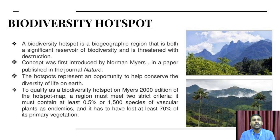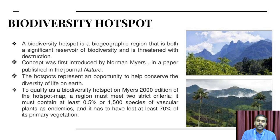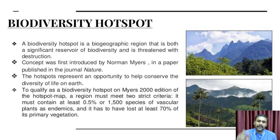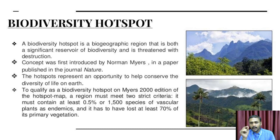The concept was first introduced by Norman Mayer in a paper published in the journal Nature. The quality criteria for a biodiversity hotspot — Mayer's 2000 edition of the hotspot map — states a region must meet two strict criteria: it must contain at least 0.5% or 1,500 species of vascular plants that are endemic.